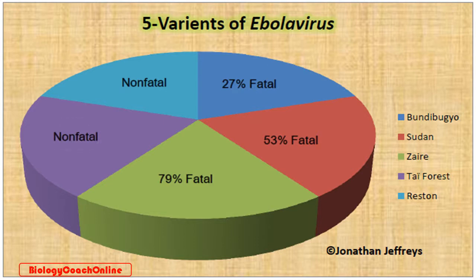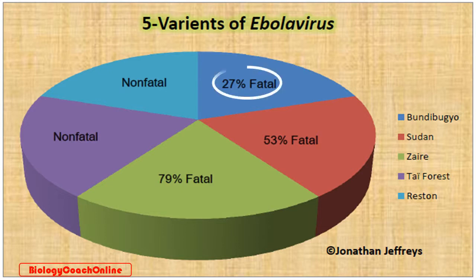We have the Reston virus, RESTV, which does not cause disease in humans. It does, however, cause disease in some primates. It's named for the city Reston, in Virginia — again, 0% fatal to humans. We have the Bundibugyo virus, or BDBV, named for a town in Uganda — that's 27% fatal to humans.